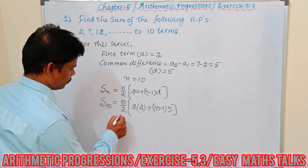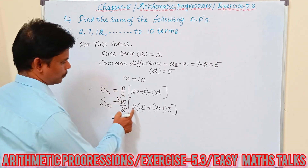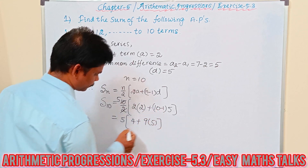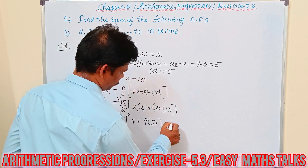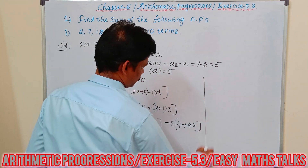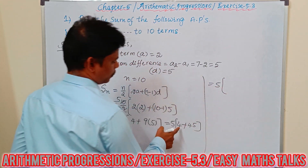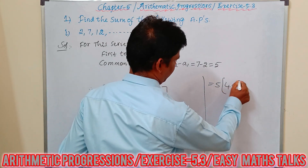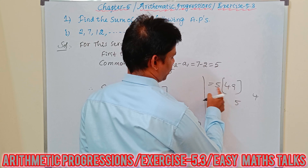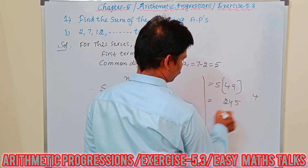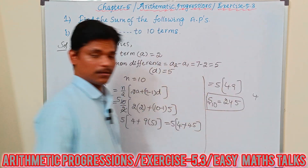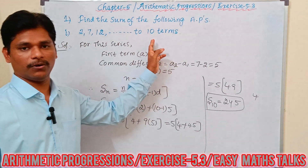Simplifying: 5 × 49 = 245. So the sum of the given Arithmetic Progression for 10 terms is 245.